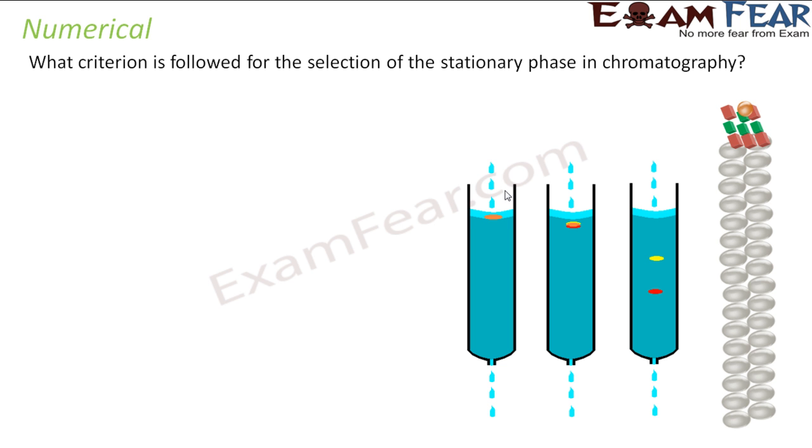What criterion is followed for the selection of the stationary phase in chromatography? The stationary phase is one which allows selective absorption of different components. For example, I have a metal which has some impurities, so the absorption of impurity should be different and absorption of metal should be different. The only criteria for choosing the stationary phase is that it should selectively adsorb different components.